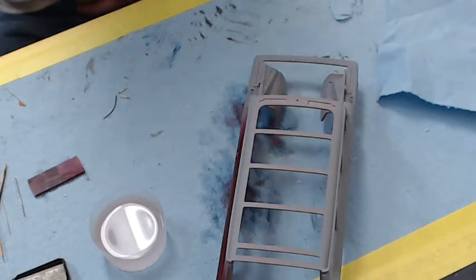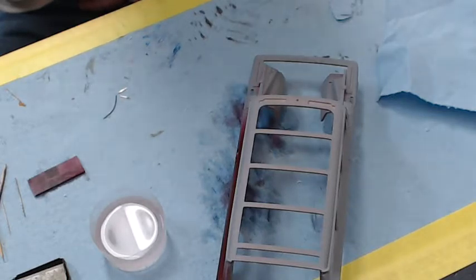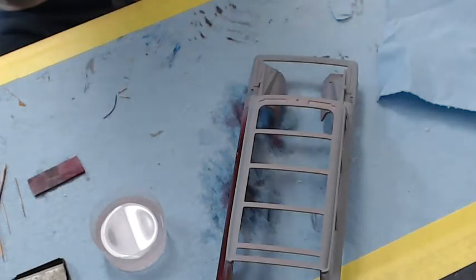Hey everybody, Hunter back again from Showtime Studios. We're going to do the first part of the tutorial on how to touch up your paint if you cut through during the wet sanding process. We just talked about what we were going to do in the first video, so this will be the actual video where we start to do something on it.